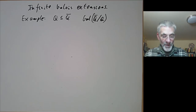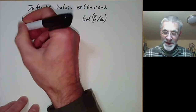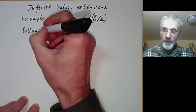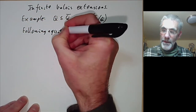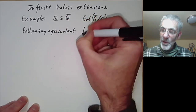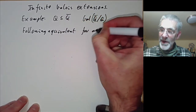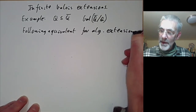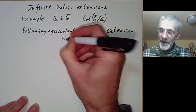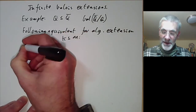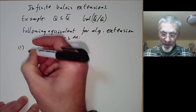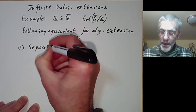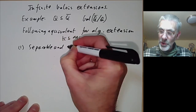So first of all, what is an infinite Galois extension? The following conditions are equivalent for an algebraic extension K contained in M: first, it is separable and normal.